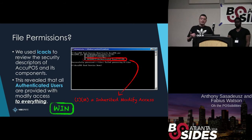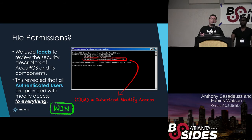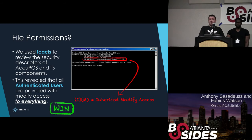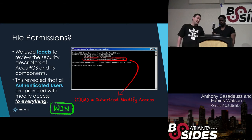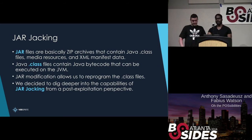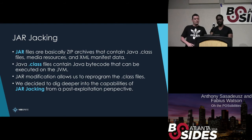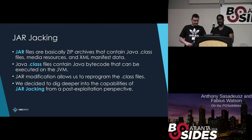Next we looked at file permissions on AccuPoS and its installation folder. Using the icacls utility bundled with Windows, we found that all authenticated users are provided with modify access. We realized we could actually backdoor the binary. Since we're able to modify a JAR file — which is essentially a ZIP archive containing class files and application resources — our ability to modify it allows us to essentially reprogram the application. We decided to explore jar jacking from a post-exploitation perspective.